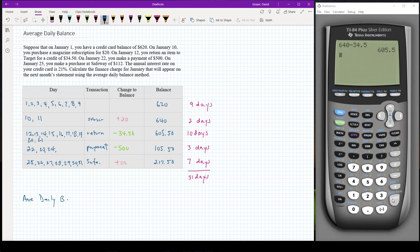And the way I do that is I need to add up the balances on all 31 days. I could say 620 plus 620 plus 620 nine times, and then 640 plus 640, 605.50 ten times in my sum. But to make it easier, I'm going to go ahead and take advantage and say 620 times 9 instead of adding up 620 nine times.